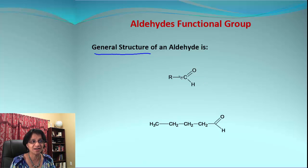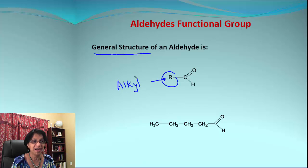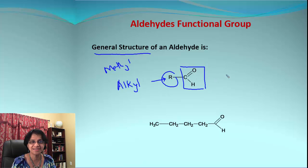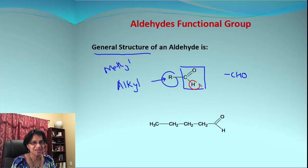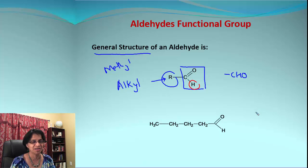This is the general structure for an aldehyde. The R group is an alkyl group — it could be a methyl group or an ethyl group — and then we have the main functional group, which is CHO. The carbon atom here is bonded with one hydrogen. This is the main way you can differentiate an aldehyde from a ketone.